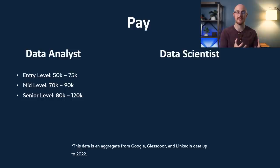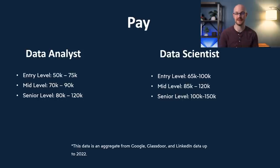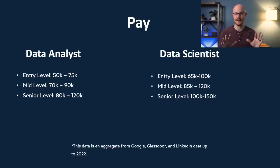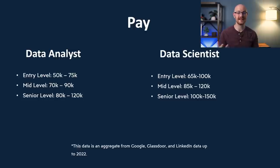Now let's take a look at data scientist pay. For an entry-level role, you'll be looking at $65,000 to $100,000. For a mid-level role, anywhere from $85,000 to $120,000. And for a senior data scientist role, anywhere from $100,000 to $150,000. You'll notice some overlap between the ranges. These are averages based on aggregations from Google, Glassdoor, and LinkedIn data, and they are pretty accurate. You're going to notice that data scientists get paid more money — I think this is because of the technical nature of the work and the higher education typically required.